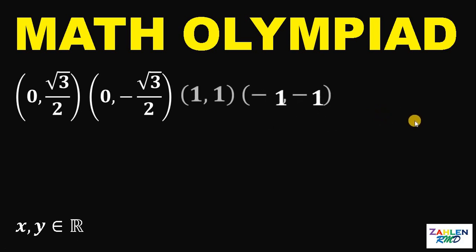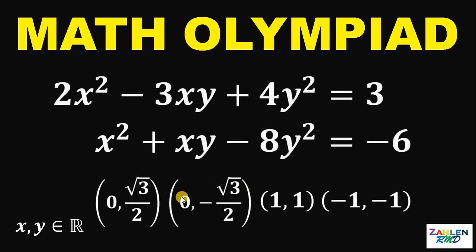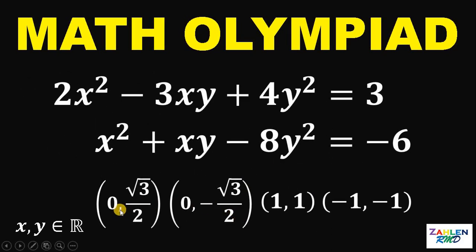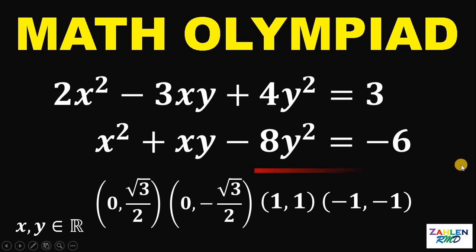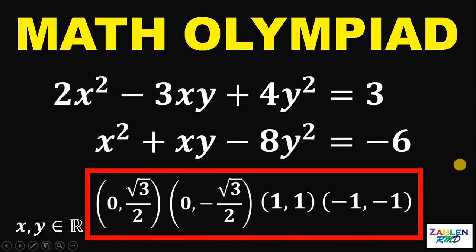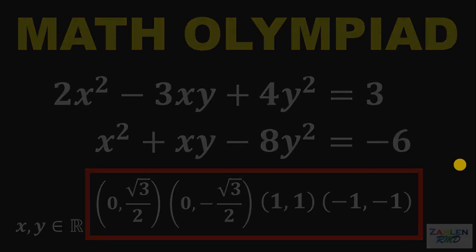Therefore, we have four possible pairs of x, y: (0, √3/2), (0, −√3/2), (1, 1), and (−1, −1). And as always, we are done. Thank you very much.